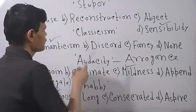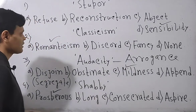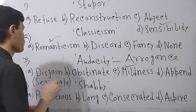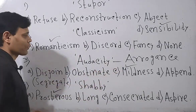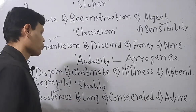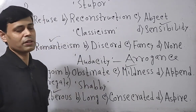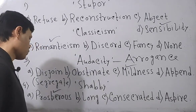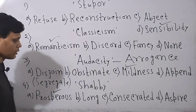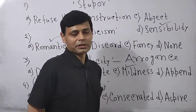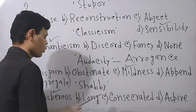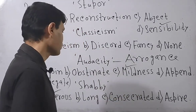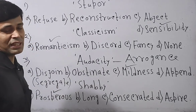To recap: the antonym of stupor is sensibility. Classicism is a very important period of English literature and its opposite is romanticism. Audacity suggests arrogance or haughtiness, and its opposite is mildness. Shabby means poorly dressed or in very dirty condition; the closest antonym is prosperous. Consecrated means purified; asper and long are equal in meaning, meaning craving. Append means to add or affix; obstinate means stubborn or insistent.